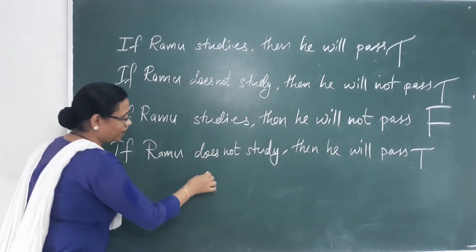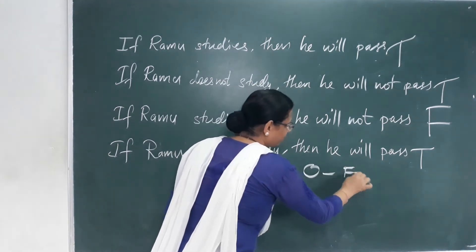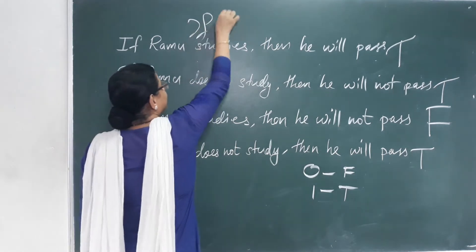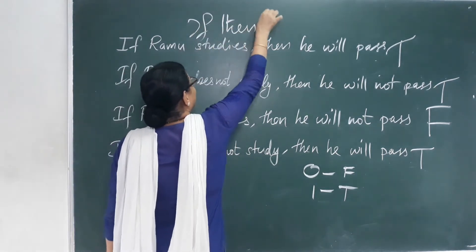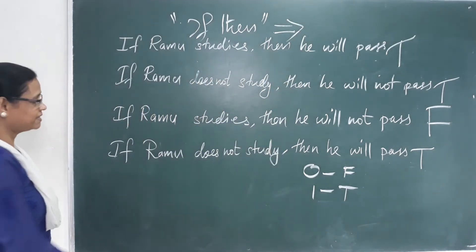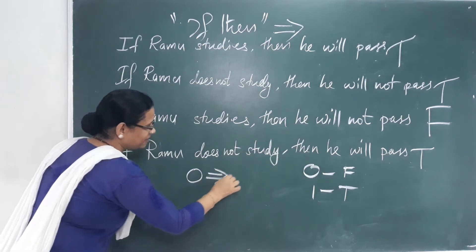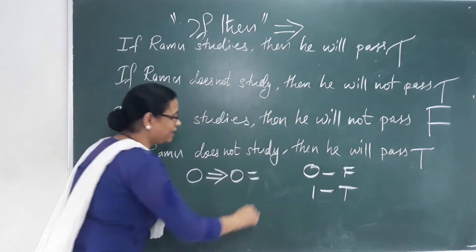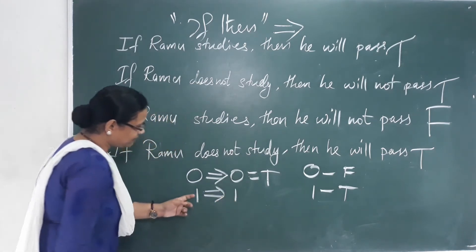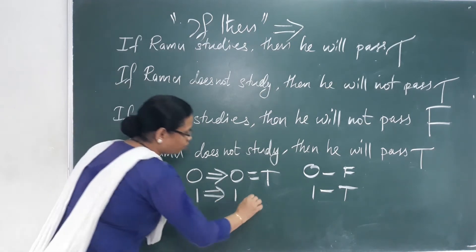This is the first sentence. How do we call zero? False. This is true. If then — which implies? How do we denote this? Zero which implies zero — that means which implies? This is true. One which implies one — that means this is true. Antecedent and Consequent are both true, so this is true.